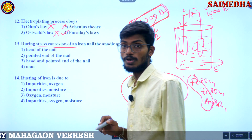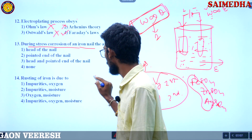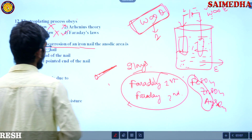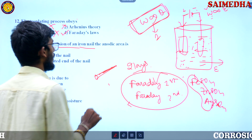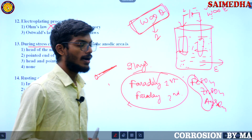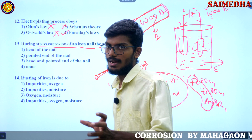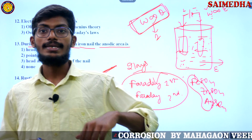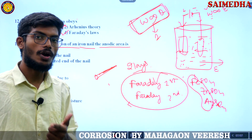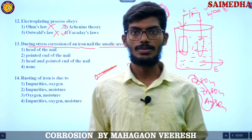During stress corrosion of an iron nail, which is the anodic area? In stress corrosion, the place where metal exhibits more stress acts as anode and undergoes corrosion. The place where metal exhibits less stress acts as cathode and does not undergo corrosion.